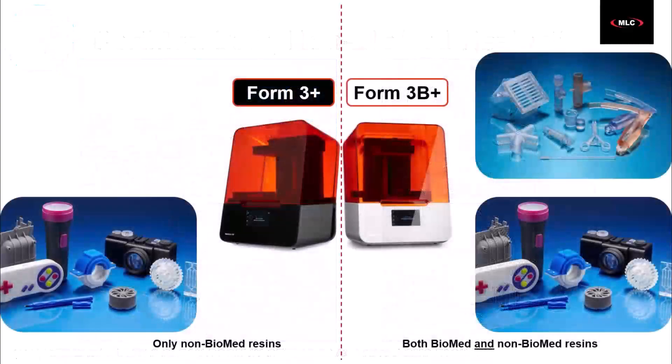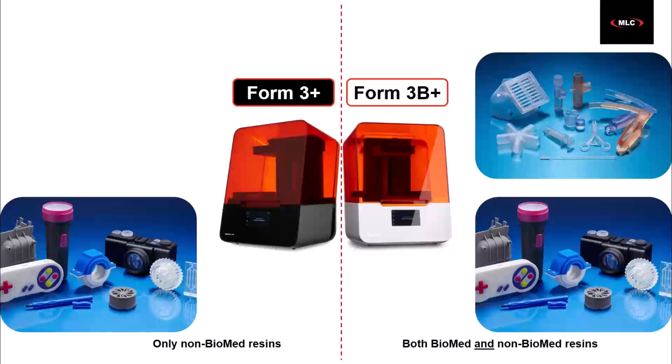Lastly, to print with the biomed resins, you need a B-series printer like a Form 3B or Form 4BL, for example. These printers can also print the non-biomed materials as well.